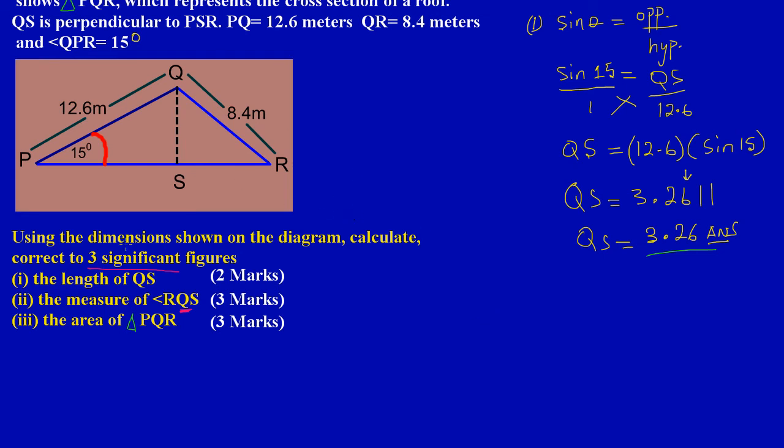In the previous video we looked at solving part one, so let's get into part two. I forgot my units, so let's put QS is equal to 3.26, and that would be in meters. Can't forget our units, very important.